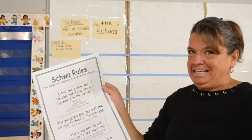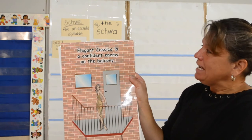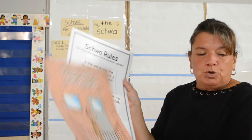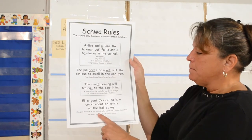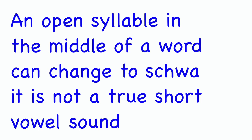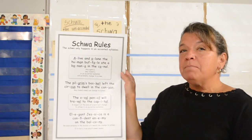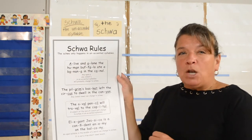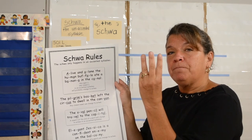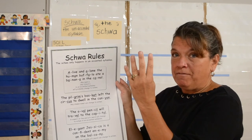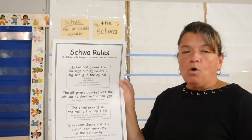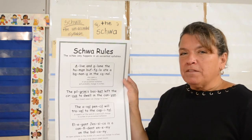And the fourth sentence, here's our picture: 'Elegant Jessica is a confident enemy on the balcony.' This sentence helps us understand that an open syllable in the middle of a word can change to schwa — it is not a true short vowel sound. Elegant Jessica can only be found in three or more syllables, because there is a middle syllable in a three- or four-syllable word, but not in a two-syllable word. So Elegant Jessica only takes place in three, four, or five syllable words, and the schwa is bigger than just your two-syllable words.